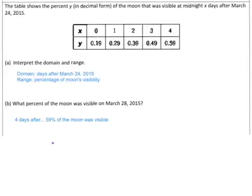So, here are the answers for you guys. What we have is the domain and range. The domain, it talks about the days after March 24, 2015. It's the days that we're counting after that point. And then the range is the percentage of that moon's availability. But it's in decimal form. So, on March 24, it was 19% visible, because that's zero days after March 24. Then, when we count to the 28th, well, that's four days later. So, at four days later, we have it at .59 or 59% of the moon was visible.